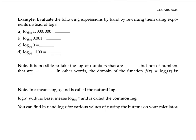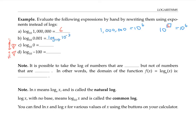Please pause the video and figure out what these logs evaluate to. To work out log base 10 of a million, notice that a million is 10 to the sixth power. We're asking what power do we raise 10 to, to get 10 to the sixth — the answer is six. Similarly, since 0.001 is 10 to the minus three, log base 10 of 0.001 is asking what power do you raise 10 to, to get 10 to the minus three — the answer is negative three.